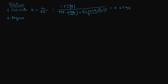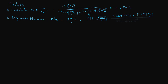Next, we calculate the Reynolds number to determine whether we have laminar or turbulent flow. Reynolds number equals density times mean velocity times diameter divided by viscosity. That equals (998.2 × 0.02291 × 3.65) / (993.414 × 10⁻⁶), and all units cancel out giving us a Reynolds number of 84,024. This tells us that we have turbulent flow in the pipe.